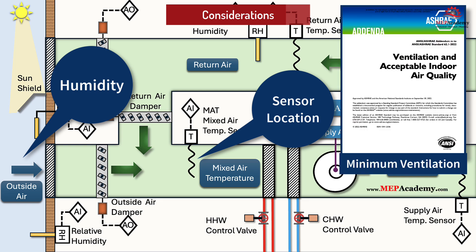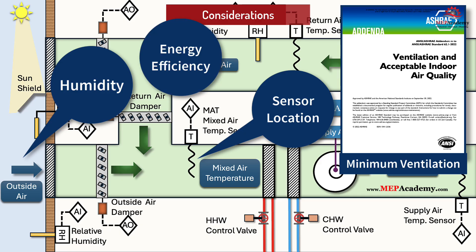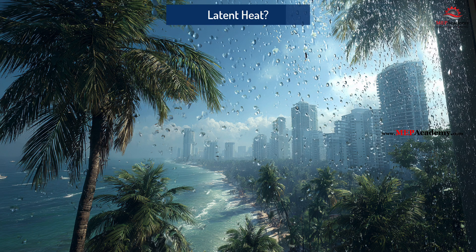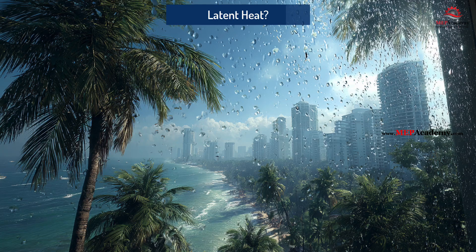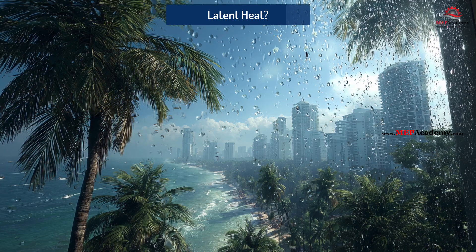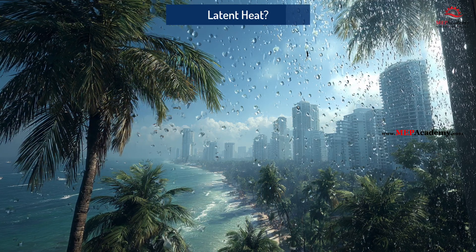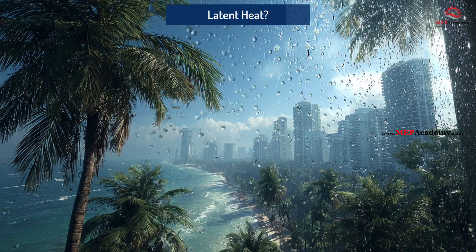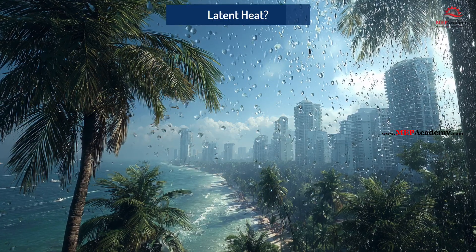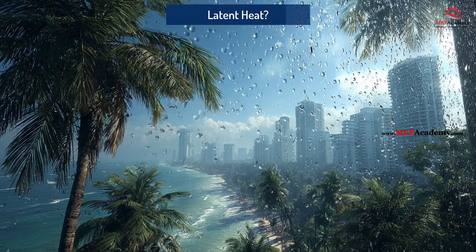Minimum Ventilation — Codes: ASHRAE 62.1 and IMC require minimum outside air for ventilation, typically ranging from 10% to 30% based on occupancy type and number of occupants. Energy efficiency: Reducing outside air percentage during extreme conditions lowers energy cost, while increasing outside air during mild weather can reduce mechanical cooling. The mixed air temperature calculation shown here is based on dry bulb temperature average, which assumes the cooling coil is operating in a dry, sensible-only condition. In climates or operating conditions where the coil is wet, this method can be misleading because it ignores the additional latent load of dehumidification.